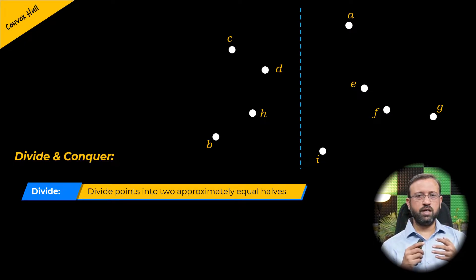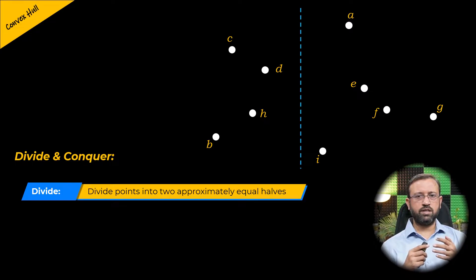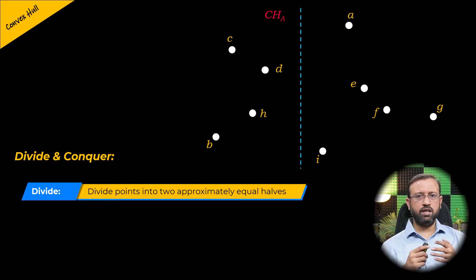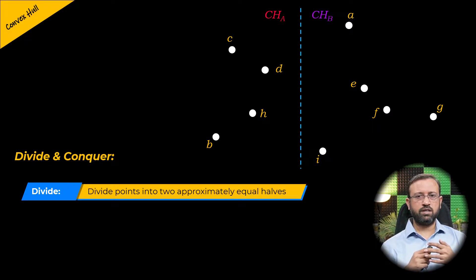The points C, D, H, and B are in the left half — let us call this set C, H, A. And the points A, E, F, I, and G are in the right half — let us call this set C, H, B.